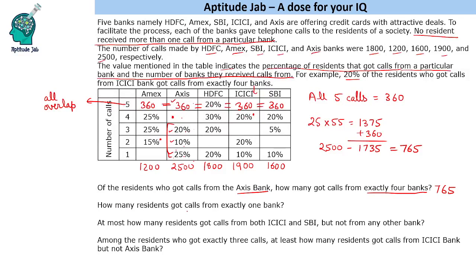The next question: how many residents got calls from exactly one bank? If a person is getting a call from exactly one bank, that person gets from only that bank and no other bank — meaning there is no overlap. Five banks means complete overlap; one bank means no overlap. We just need to find and add the values: 625, 360, 190, 160. We are left with one missing value — the MX value.